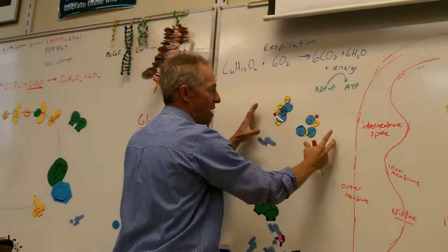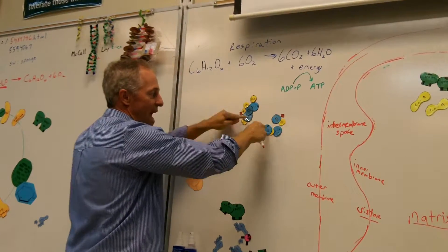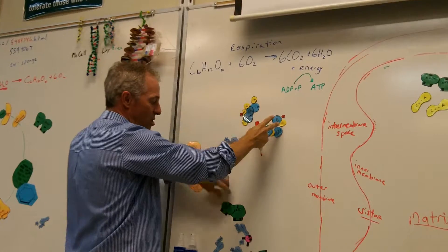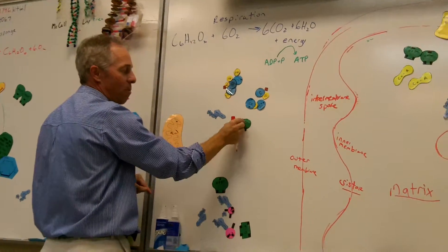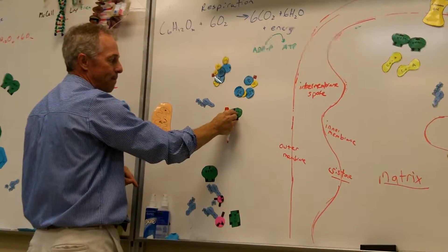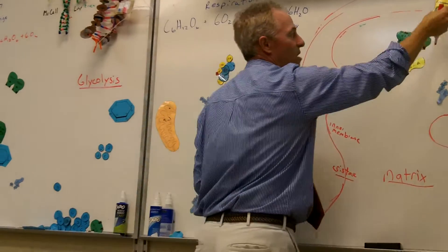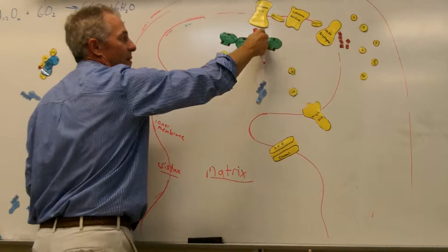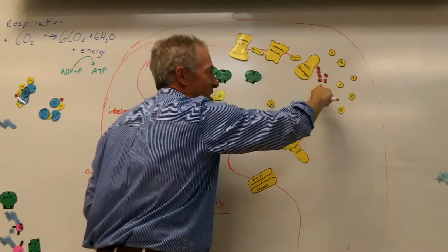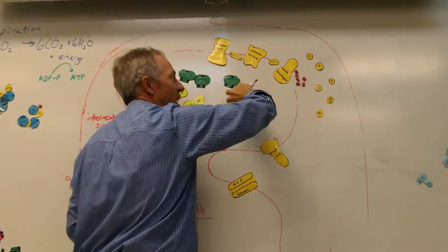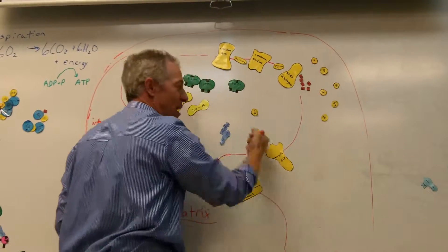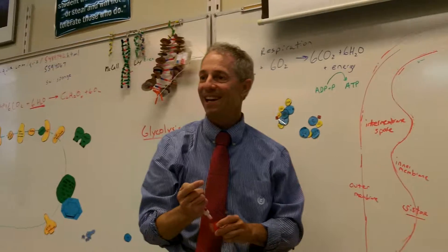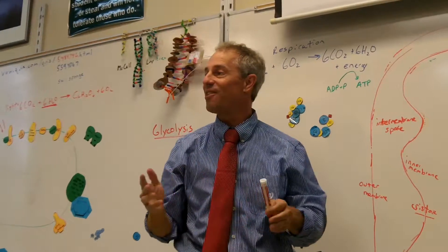So what we've done is we've broken down glucose. We've taken its protons and electrons. We've picked them up with the NAD. We've transported them in. They've run down this electron transport chain. The hydrogens get pumped out. They come back in and make ATP. That's how the mitochondria makes ATP.